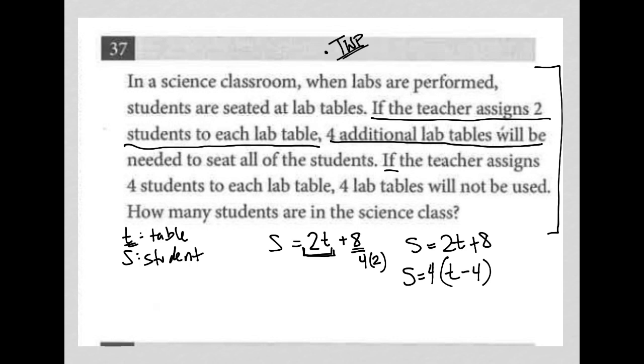That is the translation. If we put four students at each lab table, which would be four T, but then we're told that it's not going to be T because we're not going to use four of those tables. So that's why we have T minus four. Right. So we take the T that we started off with, subtract four from that number of T tables and multiply by four to get the number of students. So we have two equations, two unknowns.